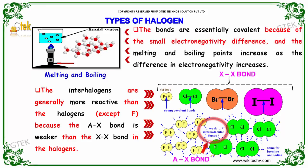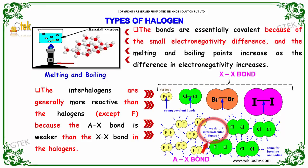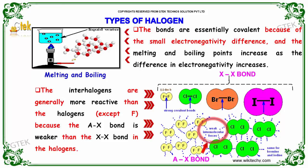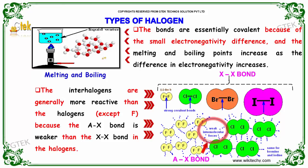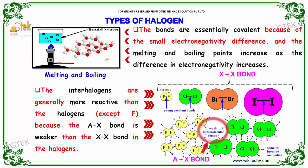The bonds are essentially covalent because of the small electronegativity difference, and the melting and boiling points increase as the difference in electronegativity increases.